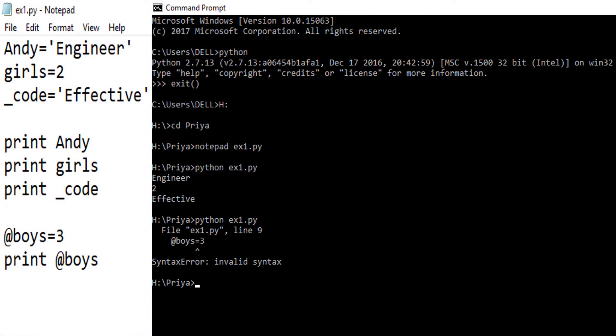Now we will see the example of identifier. So we have initialized the identifiers with the Andy with engineer, girls with two and underscore code with effective. Engineer is a string type value, two is an integer type value and effective is again a string type value. So when we print Andy, girls and underscore code, we get this following output. Here we get engineer, then two, then effective, but we have made an error. We have declared at the rate boys and initialized with an integer value three.